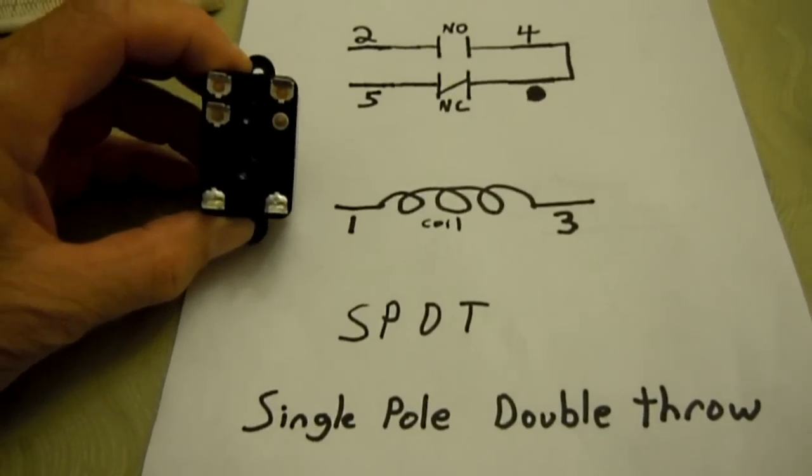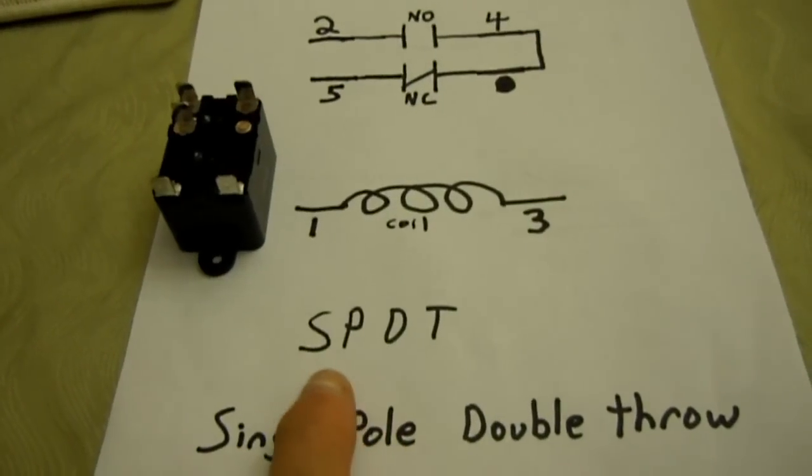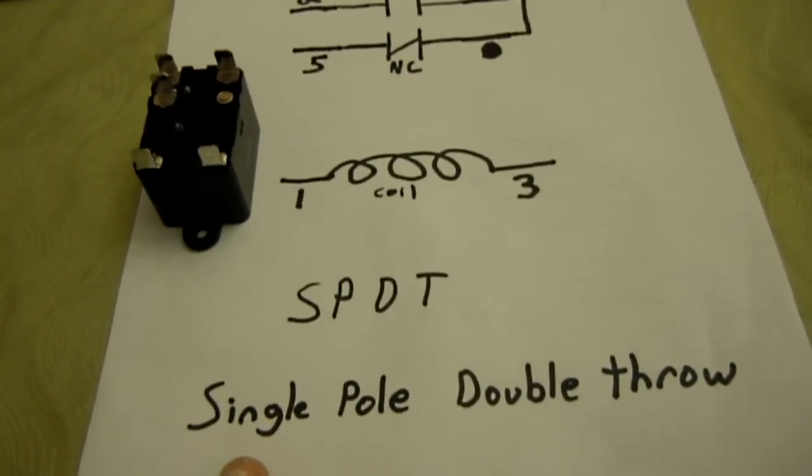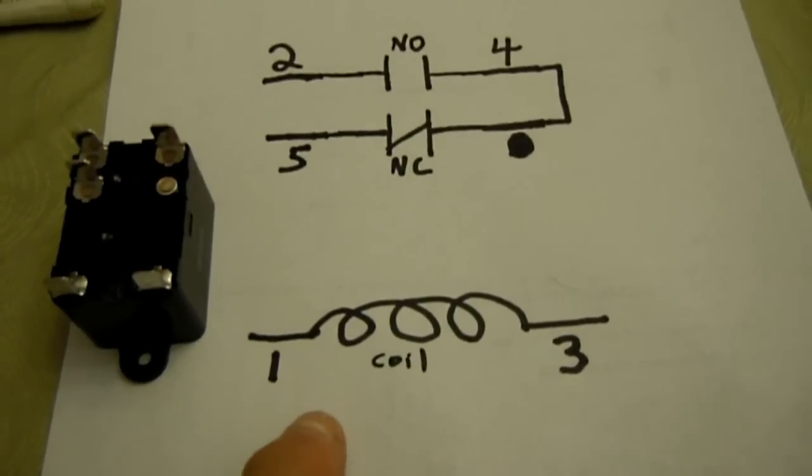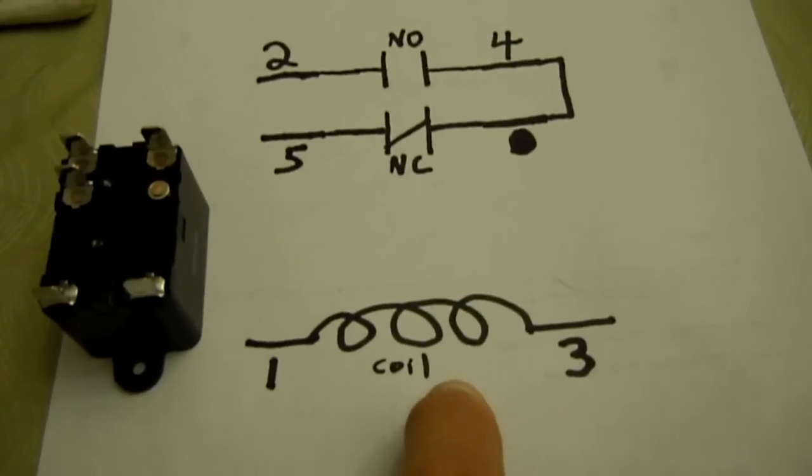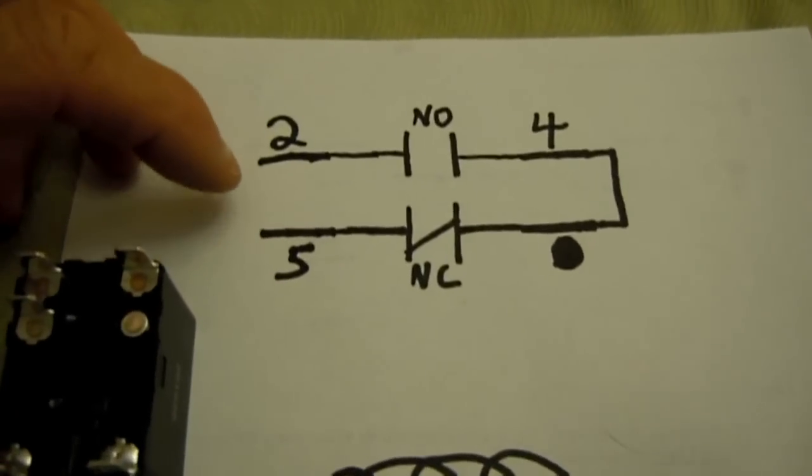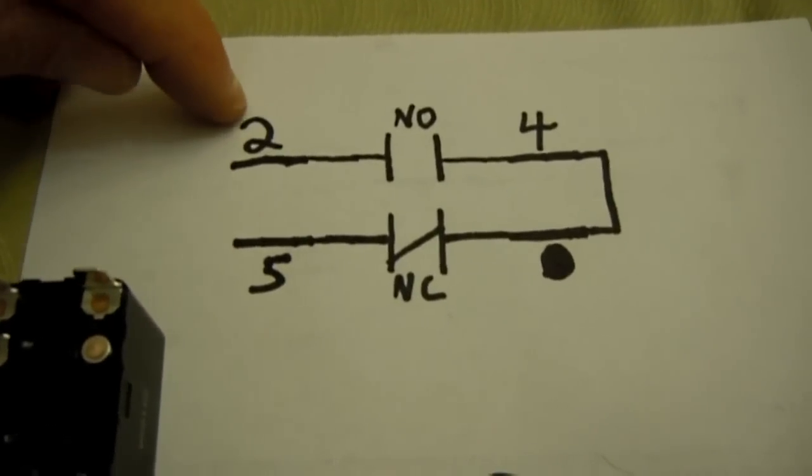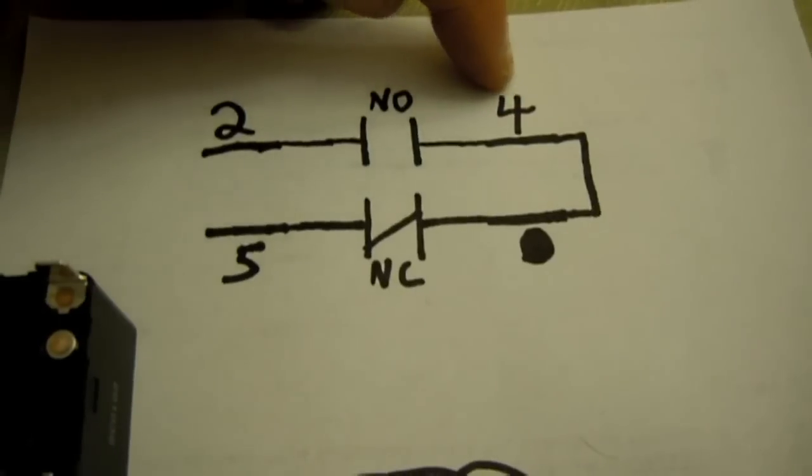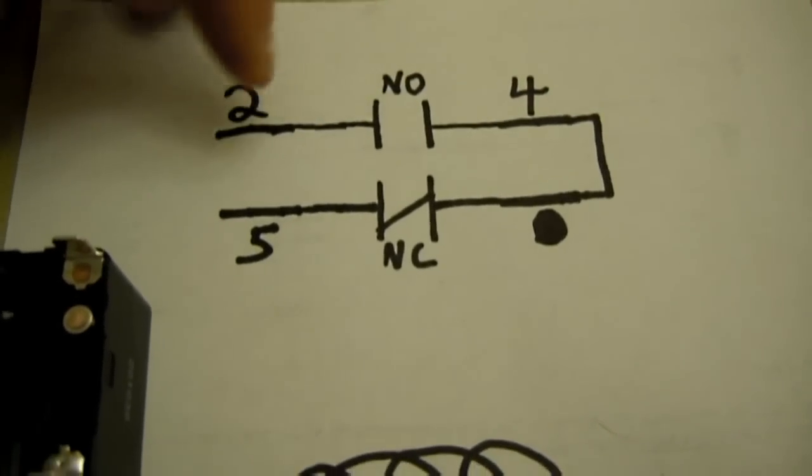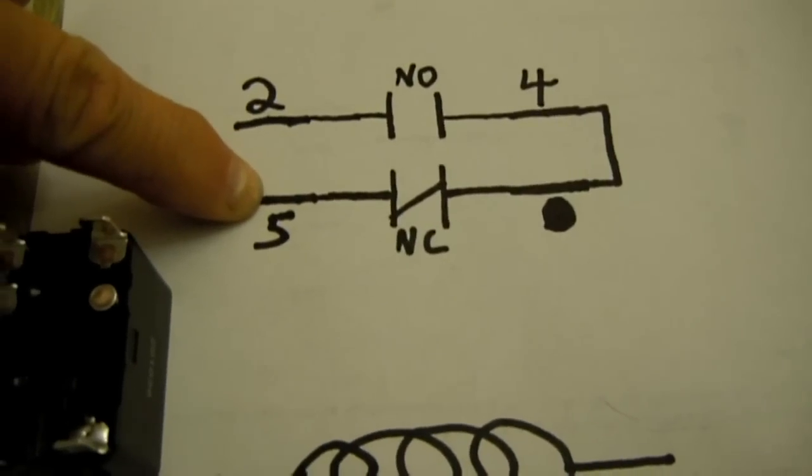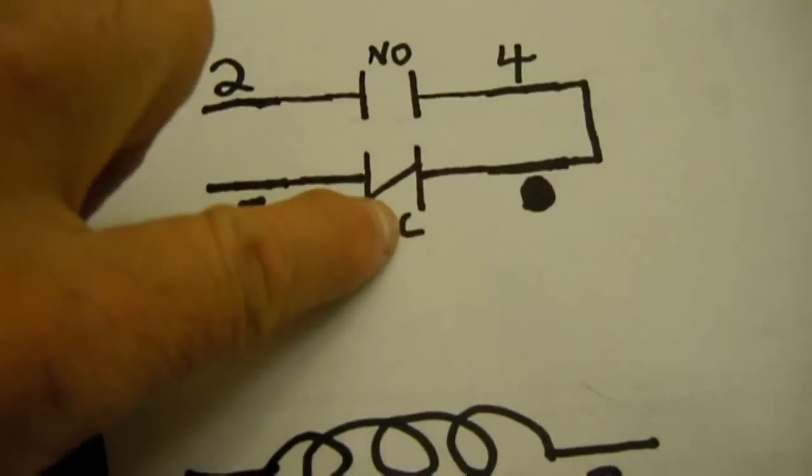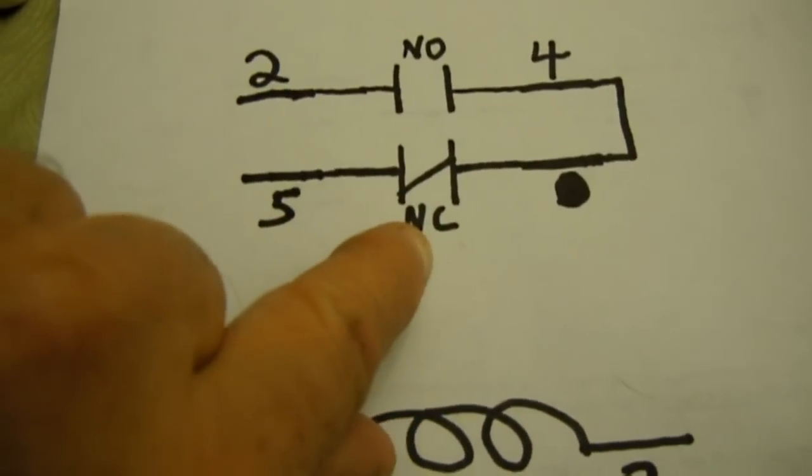And now for the five pin relay, which is the SPDT or single pole double throw relay. We have here again, positions one and three is your coil, and positions two and four is your normally open position, and five and four is your normally closed position.